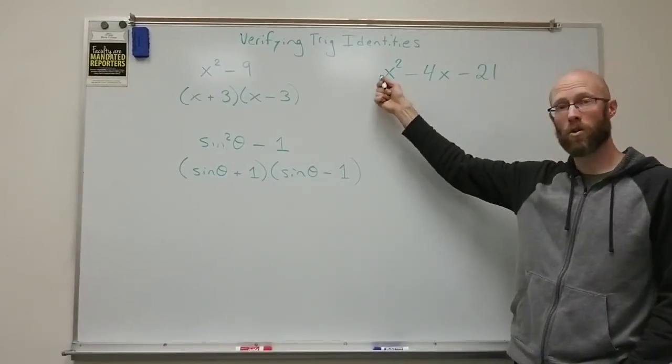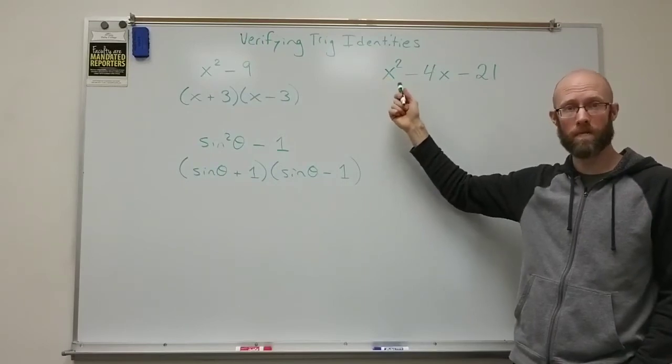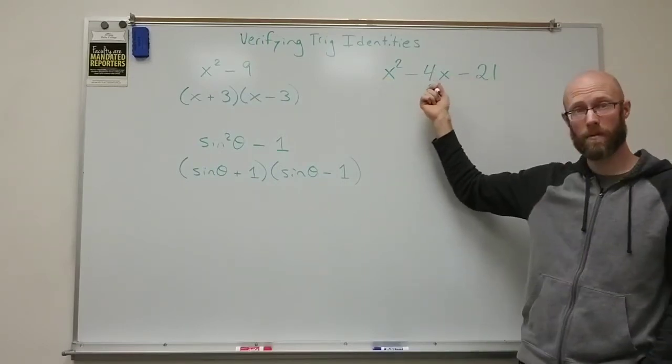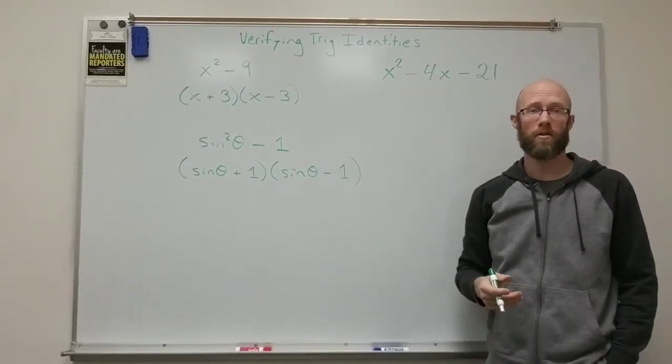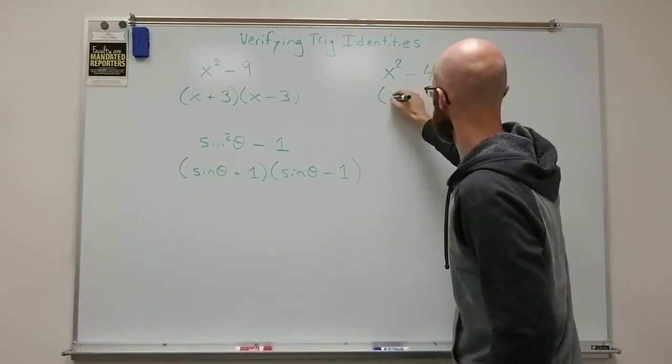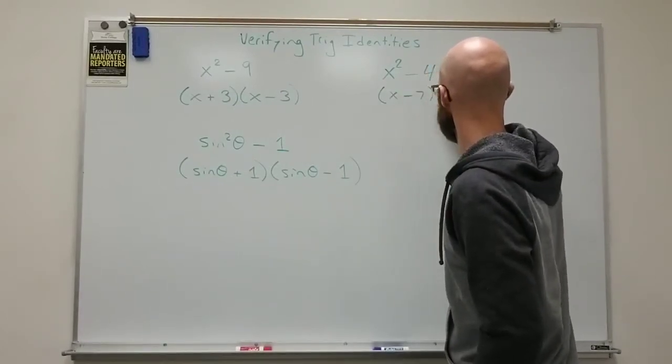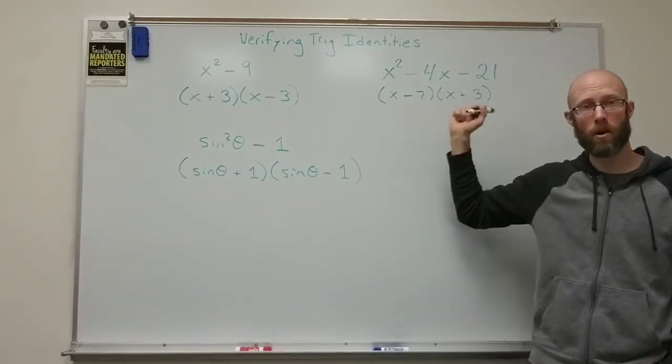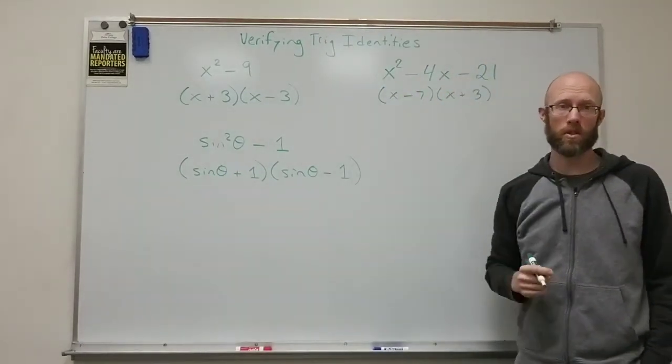and a polynomial like this, the lead coefficient is one. It's a trinomial. And we find factors of negative 21 to add up to negative four. For instance, negative seven and positive three would work. And so the factors are x minus seven and x plus three. And again, you could remultiply those together to get the original polynomial.